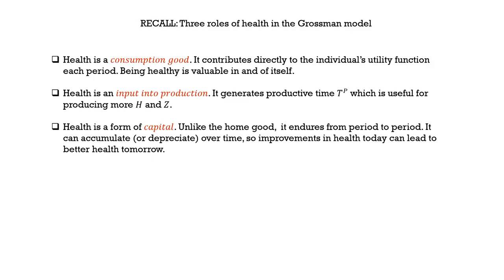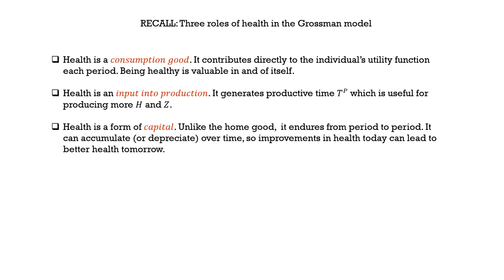To recap, health plays three roles in the Grossman model. First, health is a consumption good — it contributes directly to the individual's utility in each period; being healthy is valuable in and of itself. Second, health is an input into production — it generates productive time T_P, which is useful for producing more H and Z. Third, health is a form of capital — unlike the home good, it endures from period to period, accumulating or depreciating over time, so improvements in health today can lead to better health tomorrow.